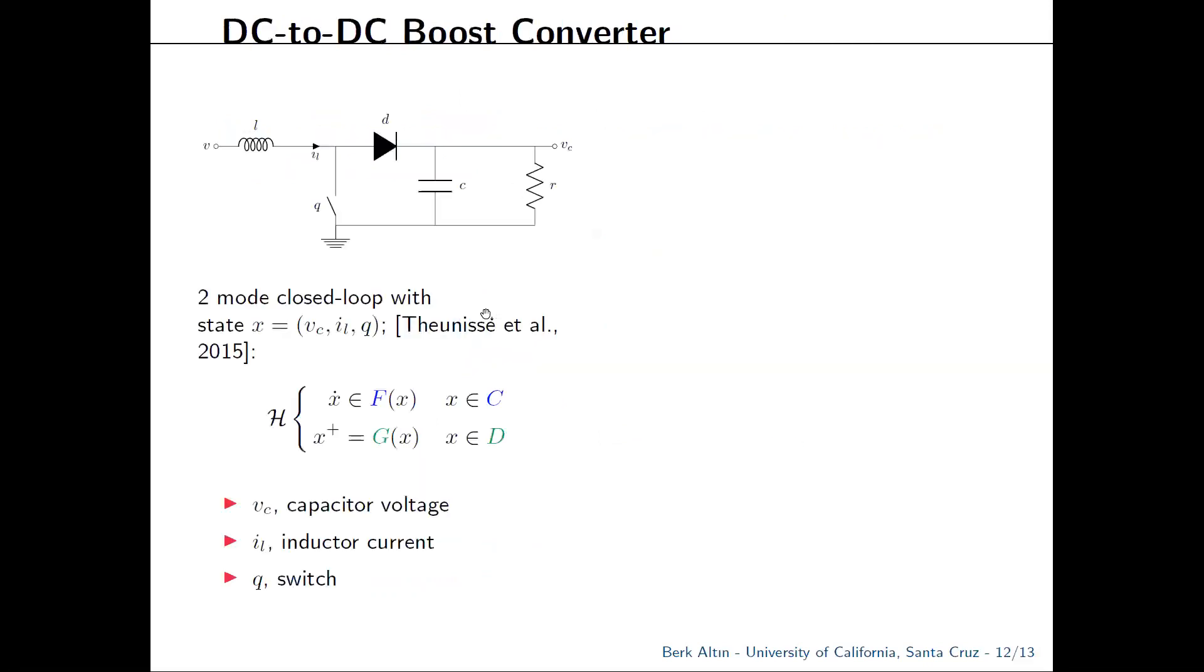The second application example is a boost converter, a power system which steps up the input voltage V to a desired value by rapidly closing and opening the switch Q over here, often actuated by a transistor. This is a differential algebraic system, a switching system with four modes, but once you close the loop with a CLF-like quantity, it can be reduced to a two-mode system with a differential inclusion.